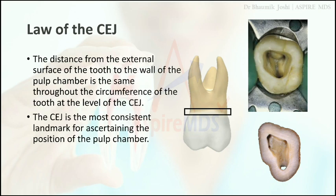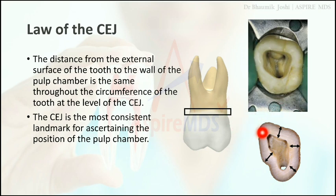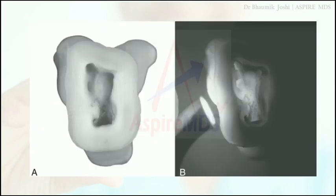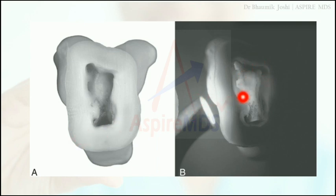Next is the law of CJ. According to this law, the distance from the external surface of the tooth to the wall of the pulp chamber is the same throughout the circumference of the CEJ. This makes the CEJ the most consistent landmark for ascertaining the position of the pulp chamber. If you use fiber optic light at the level of the CEJ during root canal access, you will be able to illuminate the floor of the pulp chamber, though magnification using loops or other means is needed to appreciate the anatomy better.